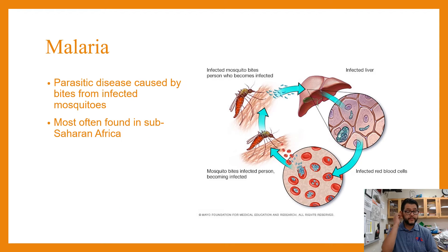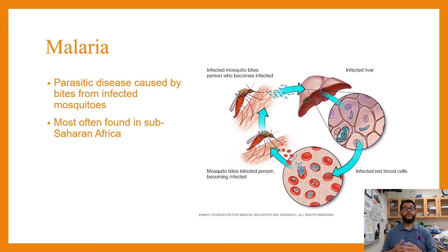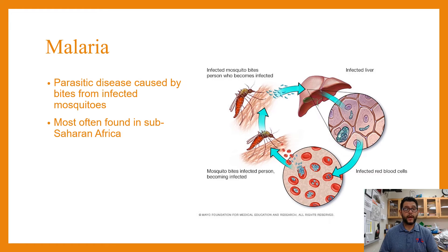Then we get to malaria, which is not a virus and not a bacteria — it is one of our first protists. It's called a plasmodium. Malaria is common in sub-Saharan Africa, but it has been spreading because mosquitoes have been spreading because of climate change as well.